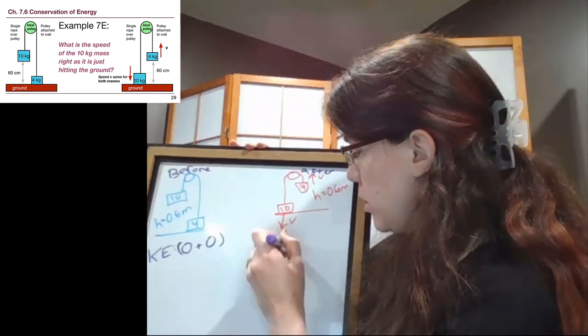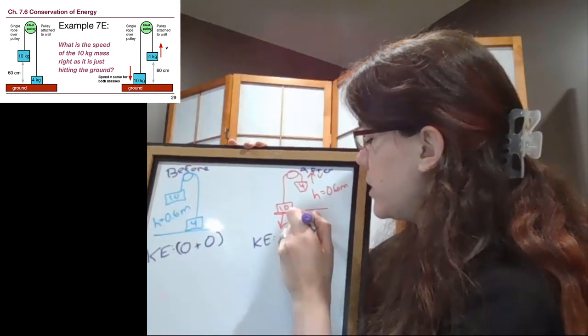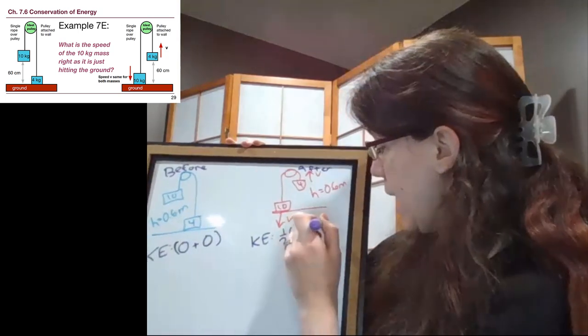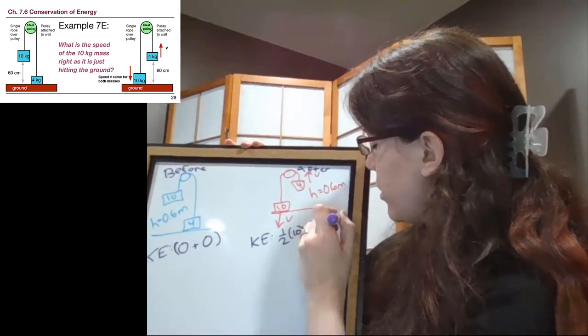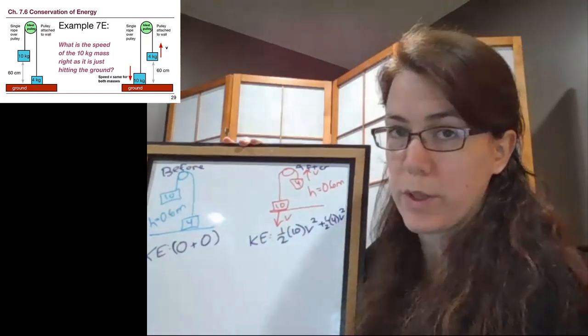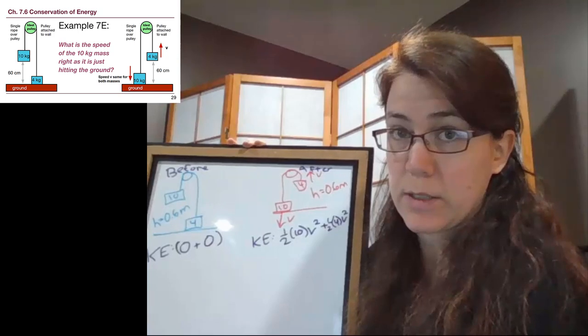The 10 kilogram block is going to have a speed V. And I know it's small, the four kilogram block is also going to be moving with a speed V. So both of the kinetic energy terms exist here. The other type of energy that we currently have is gravity. And so we're asking ourselves for each object, is that object higher?